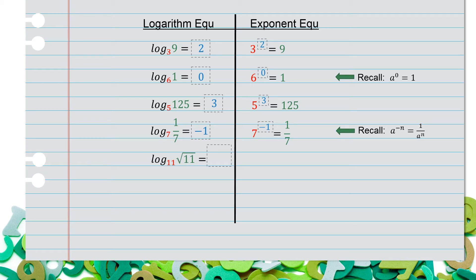Log base 11 of square root 11 equals what? Our base was 11, so 11 raised to some power equals the square root of 11. We go back to our rules of exponents: a raised to the power of 1 over n equals the nth root of a. We're taking the square root of 11, so the index is understood to be 2 — there's an imaginary 2 — which means this is 11 raised to the power of 1/2. So log base 11 of square root 11 equals 1/2.